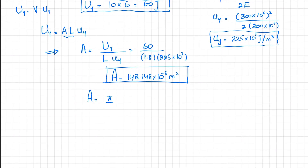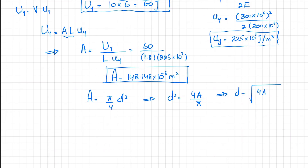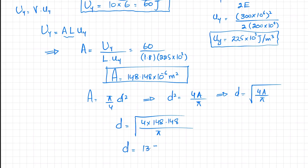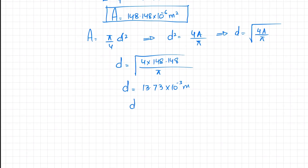From here, D squared equals 4A divided by pi, so D equals the square root of 4 times A divided by pi. Putting in the value: D equals the square root of 4 times 148.148×10⁻⁶ divided by pi. When you solve it using a calculator, the diameter equals 13.73×10⁻³ meter, or diameter equals 13.73 millimeter.